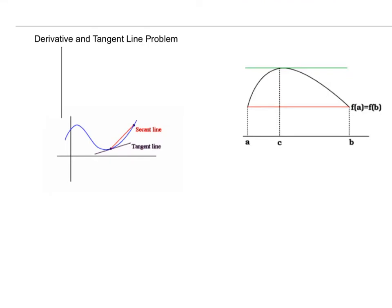I just want to do a quick review of the derivative and tangent line problem. The tangent to a curve is going to intersect this curve in one point. So the slope of the tangent line is the slope of the tangent line to a curve at that particular x point. A secant line of course is going to intersect the curve in two places, and to find the slope of a secant line is pretty easy — rise over run, change in y over change in x. But the slope of the tangent line is the limit, as these two points get closer and closer together until they reach that point of tangency.